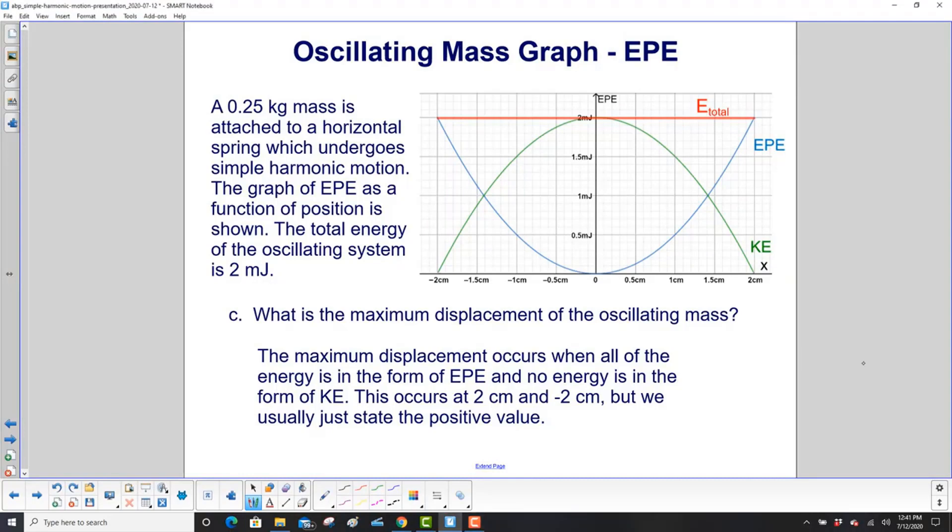What is the maximum displacement of the oscillating mass? You look at the graph, and the graph does not go past two centimeters. That tells you that since the kinetic energy is zero, and the elastic potential energy is a maximum, you're at the end of the limits of your oscillating mass. The maximum displacement occurs when all of the energy is in the form of EPE, and no energy is in the form of KE. It occurs at two centimeters and minus two centimeters, but normally we just state the positive value.